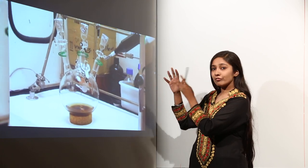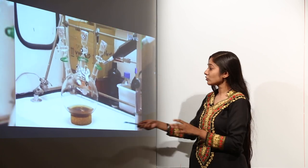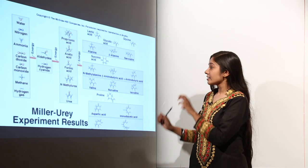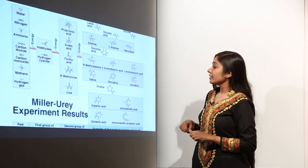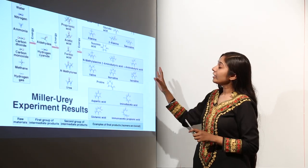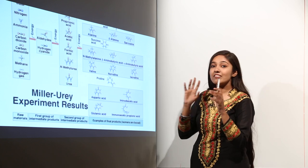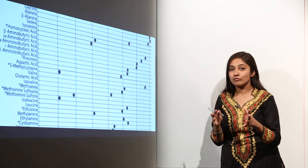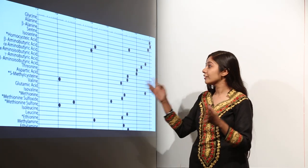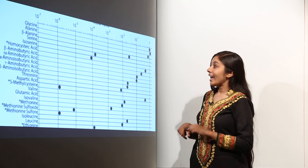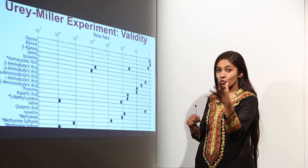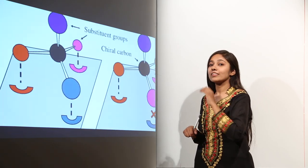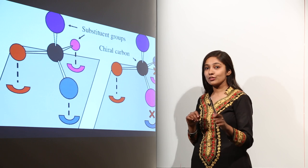Initially the solution was pink, and after a few days the water in the flask turned red and turbid. This is how he found 11 important amino acids that are essential for life on earth, and how these experiments proved the Haldane and Oparin theory of the origin of life.